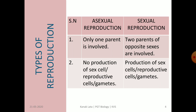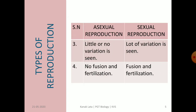Let us see the differences between asexual and sexual reproduction. In asexual reproduction, a single parent is involved, whereas in sexual reproduction, two parents of opposite sexes are required. In asexual reproduction, there is no production of sex cells, reproductive cells, or gamete cells. In case of asexual reproduction, there is little or no variation, which is why they are called clones.